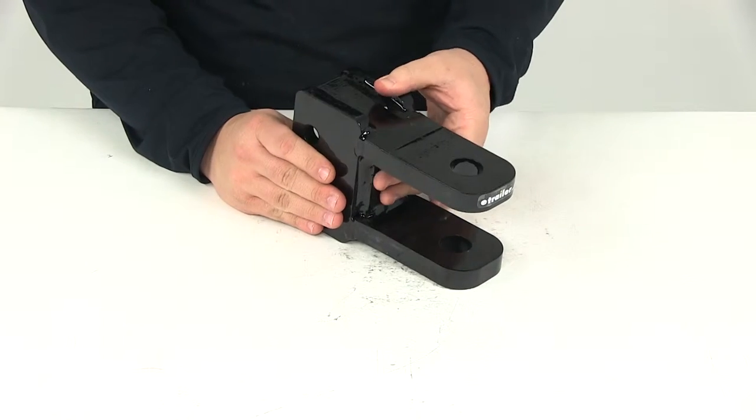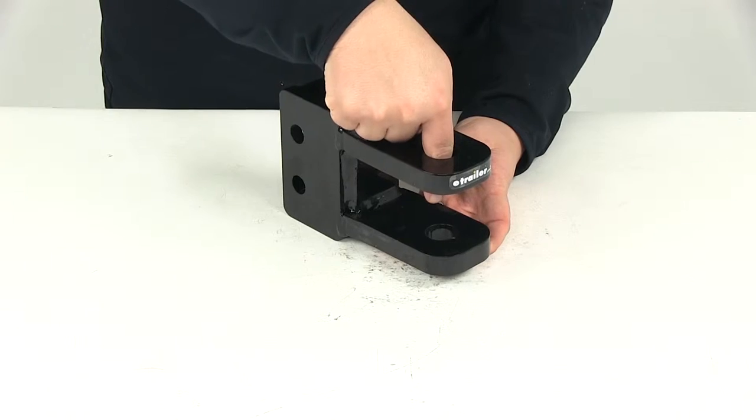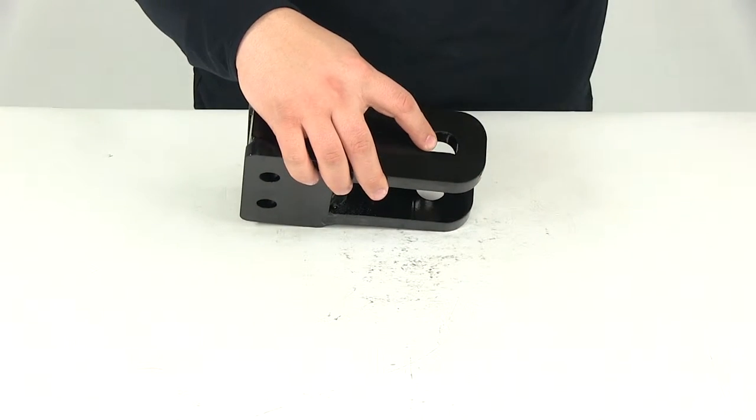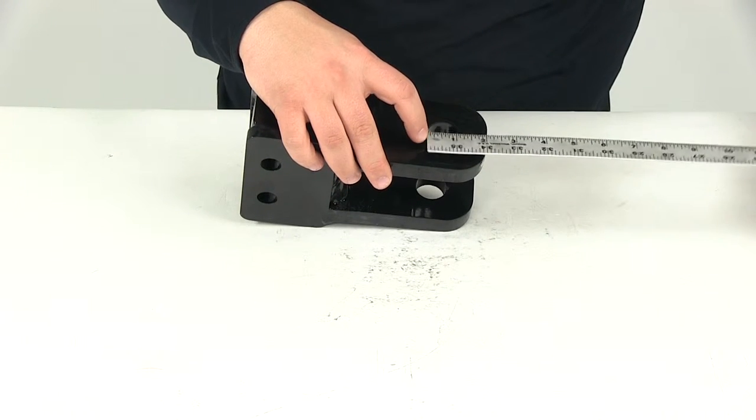Now the Tutank Clevis is designed to couple with a lunette ring. The clevis pin is going to be sold separately. That's going to go down through this portion here and through the hole here in the bottom. The diameter of this hole right here is going to give us a measurement of one inch.